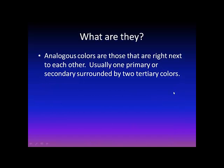So what are they? Analogous colors are those that are right next to each other on the color wheel. Usually one primary — which would be red, yellow, and blue — or a secondary, which would be green, purple, and orange, surrounded by two tertiary colors, which is any combination of a primary and secondary.